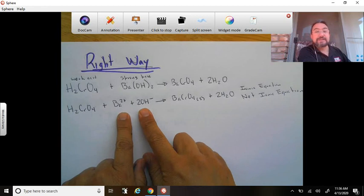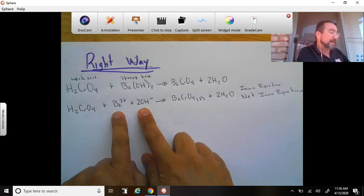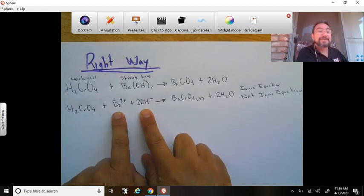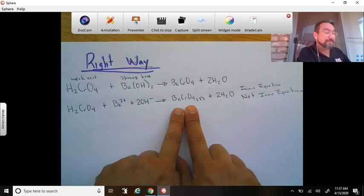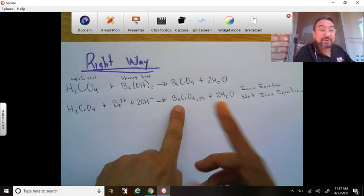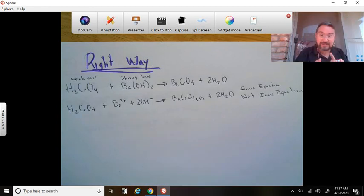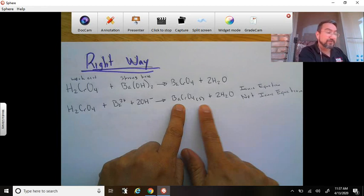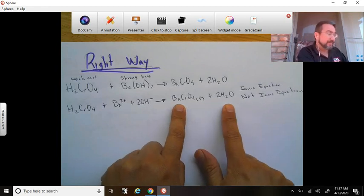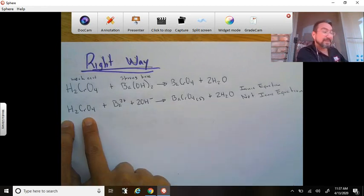And then we get to this barium chromate. It's insoluble, it's a solid, it's gonna precipitate to the bottom of the beaker. So in other words, I don't split it. And of course the water doesn't get split, it's covalent.